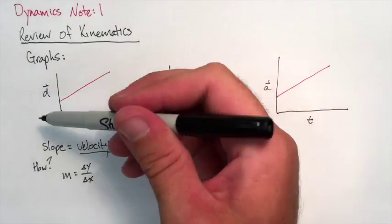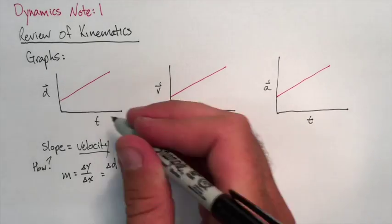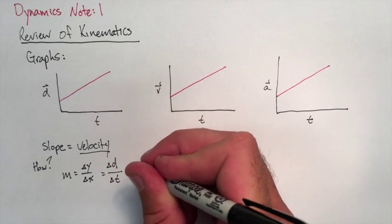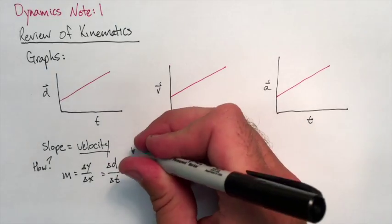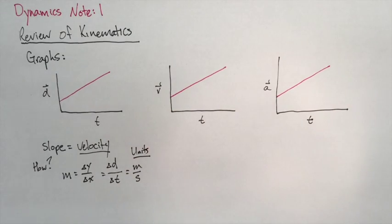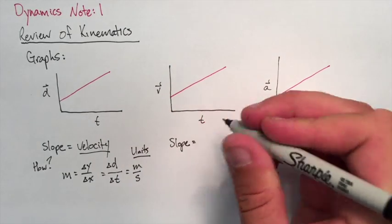Let's check what the units of the slope are. So we have a change in y, which is a change in displacement, over a change in x, which is a change in time. So the units would be in meters per second. So that indeed is a velocity.